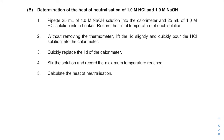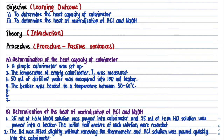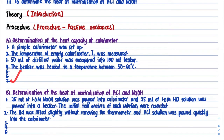For Part B, the lab manual says to pipette 25 ml. Here I have helped you write it in passive past tense: 'The 25 ml of NaOH solution was put into the calorimeter and 25 ml of HCl solution was put into a beaker.' The remaining three steps are quite straightforward — I believe you can change them into passive sentences by yourself.